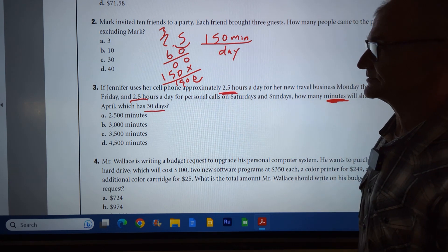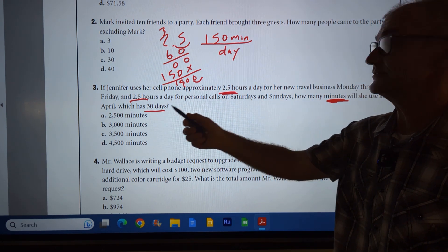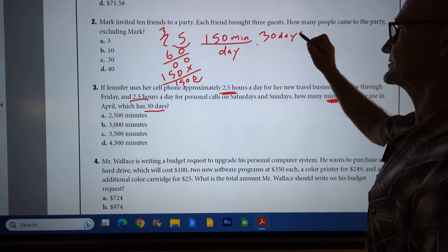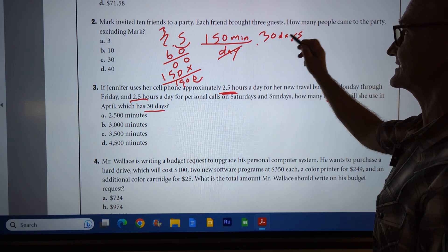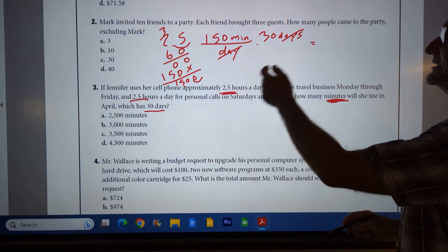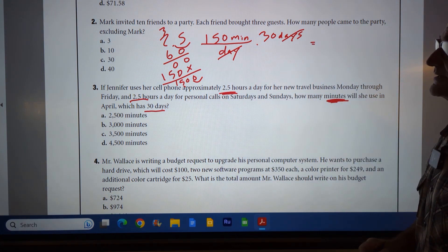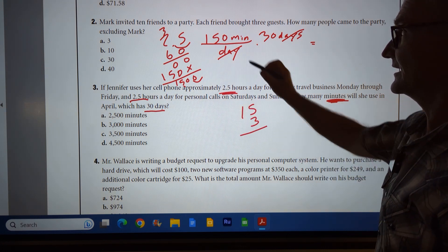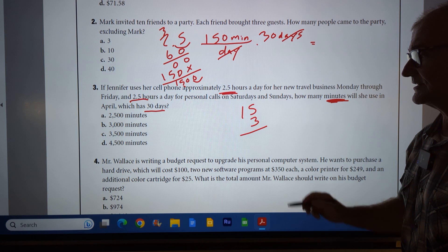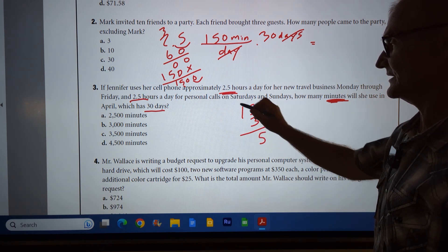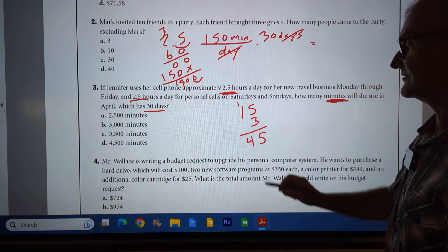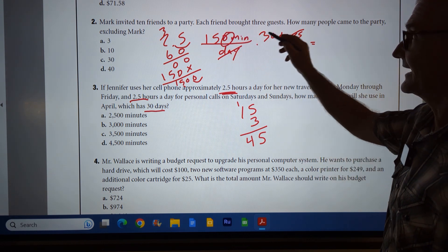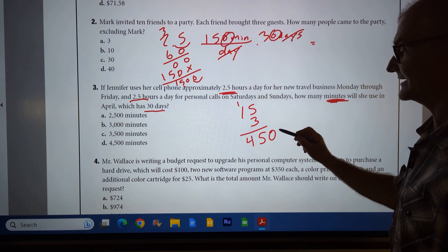And then I know I'm going to multiply that by the 30 days. So I multiply that by 30 days. As I multiply these things, I could see my days cancel, and that's going to give me minutes. So my unit will be correct. I could actually just do 15 times three. I'm not going to use those zeros to the end. 15, carry the one, 45.